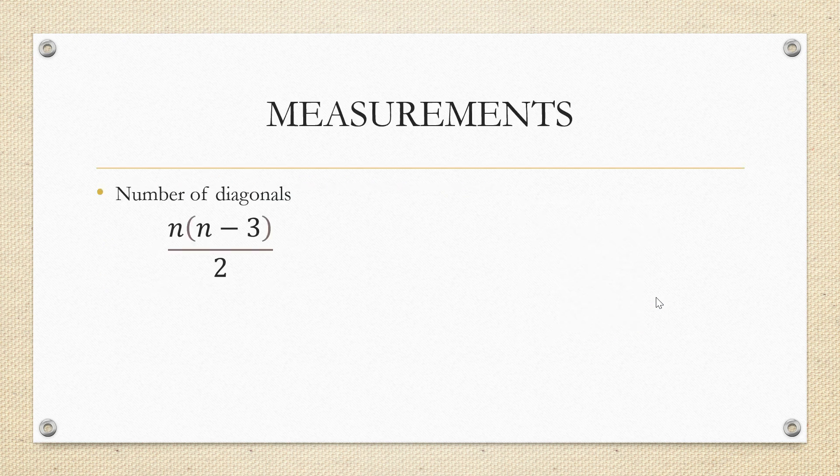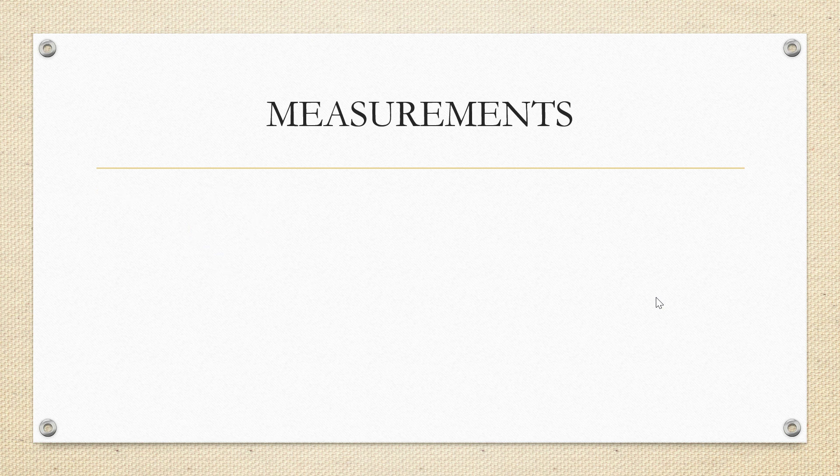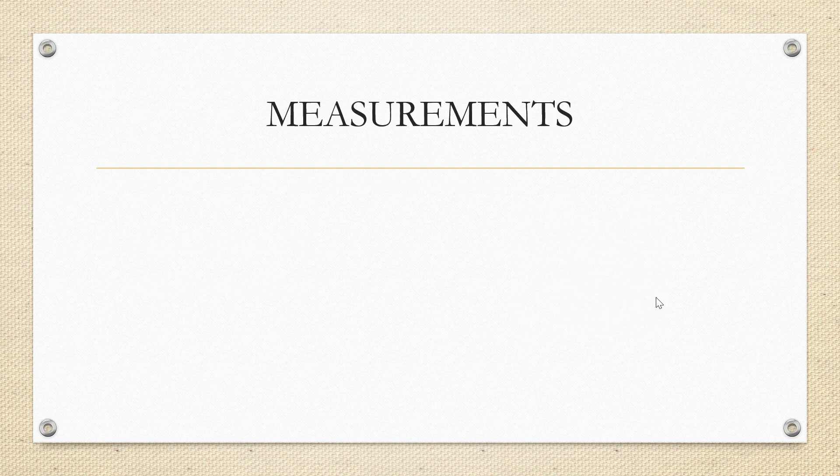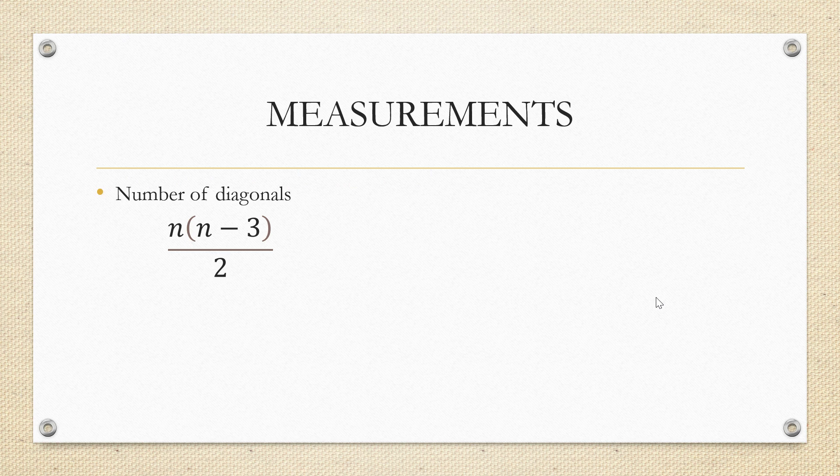For any polygon with side n, we have certain formulas to calculate the number of sides. For any regular polygon with n sides, number of diagonals can be calculated using n into n minus 3 by 2. Consider a quadrilateral which has four sides. Substituting the values 4 into 4 minus 3 divided by 2 and calculating it will give two diagonals. So, a quadrilateral has two diagonals.